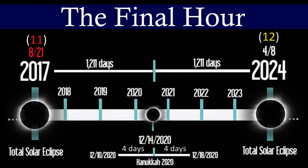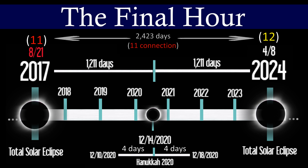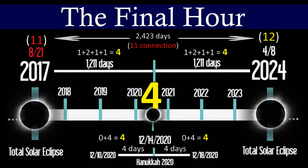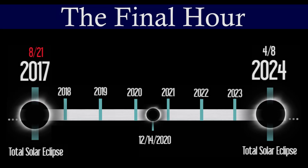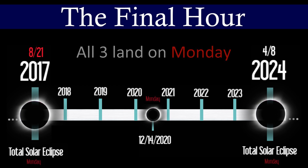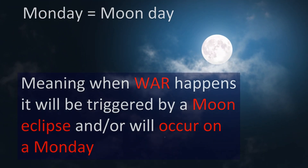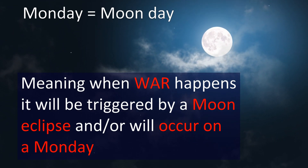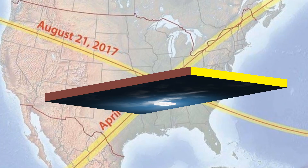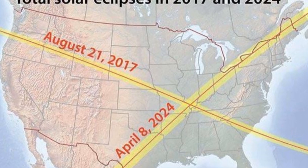We have a number 11 connection with the first eclipse, an 11 connection with the date duration between eclipses, and a connection to the number four between these eclipses. All three of these total solar eclipses land on Mondays — which implies God wants us to be sensitive to this detail. Now let's switch tracks and focus on the very first eclipse of this twin eclipse pattern.